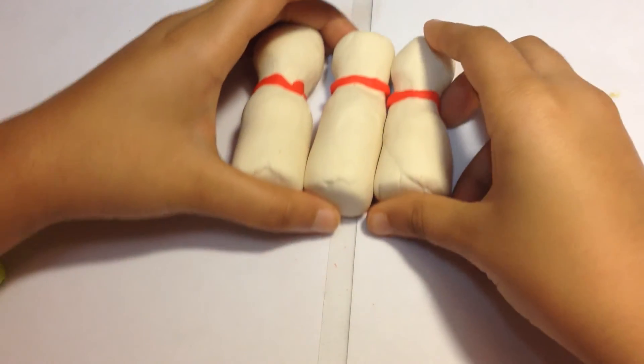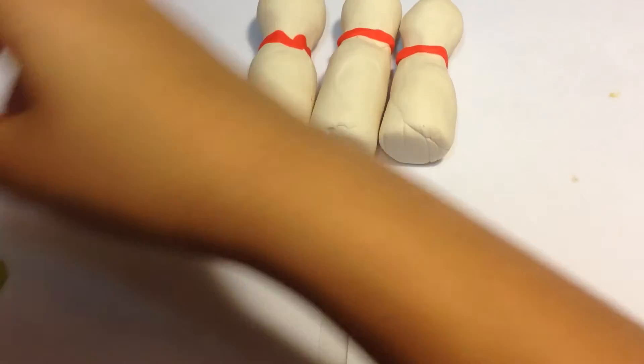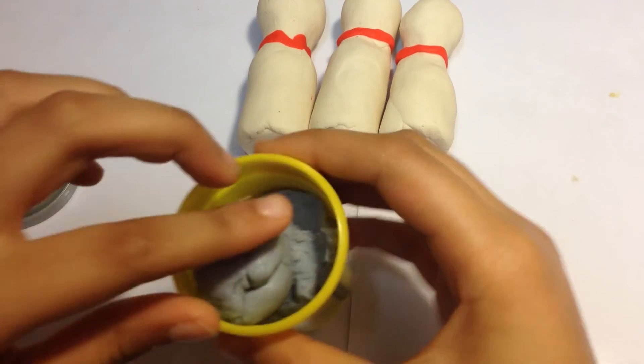Okay, I'm done making my bowling pins. Now I'm going to make my bowling ball with grey Play-Doh.